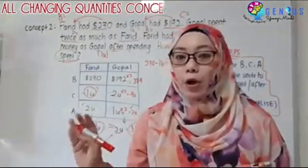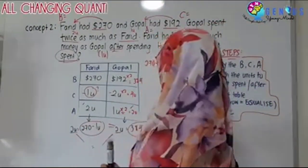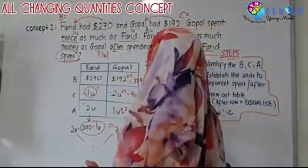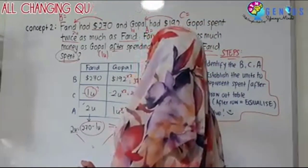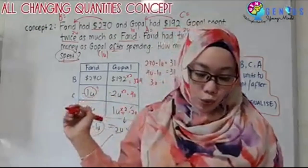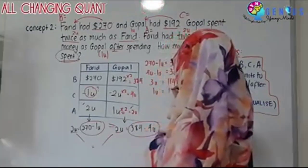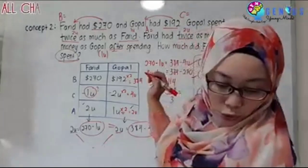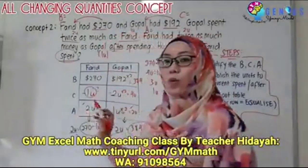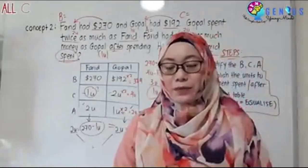We group all units to one side and all numbers to the other. Four units minus one unit equals 384 minus 270, so three units equals 114. Therefore one unit equals 114 ÷ 3, which equals $38. We check: we wanted to find one unit — and we got it. So $38 is our answer.